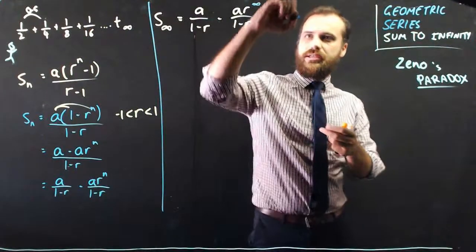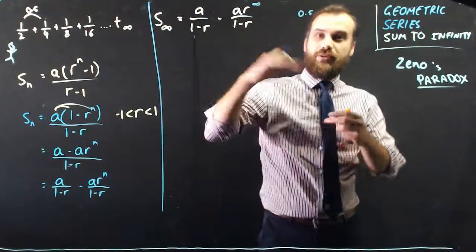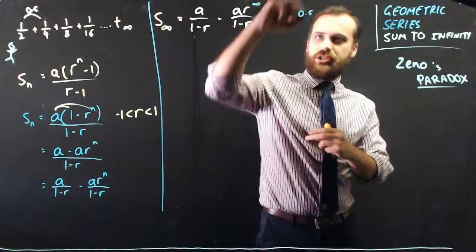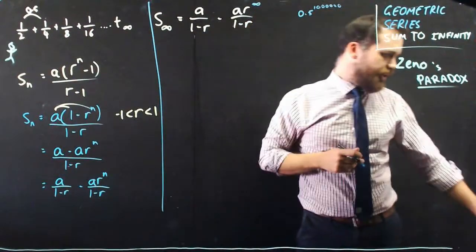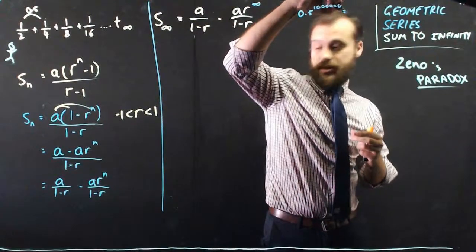Now, if I take 0.5 and raise it to an extremely large number, like a million, if you put that into your calculator, your calculator will actually tell you that the answer is 0.